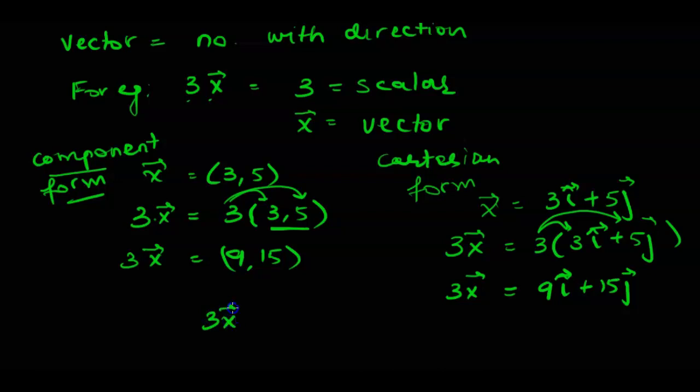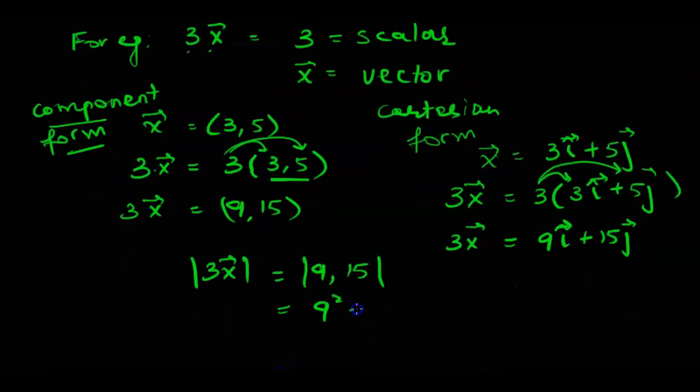Now if we are supposed to find out the magnitude of 3x vector, we can pick any of these forms. Magnitude of (9, 15) would be square root of 9 squared plus 15 squared which is 81 plus 225 which gives us square root of 306. Because we do not know what are the units, we just put square root 306 units.